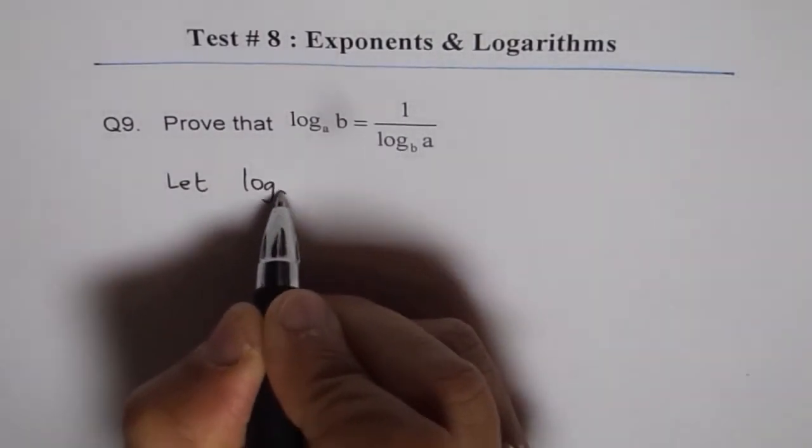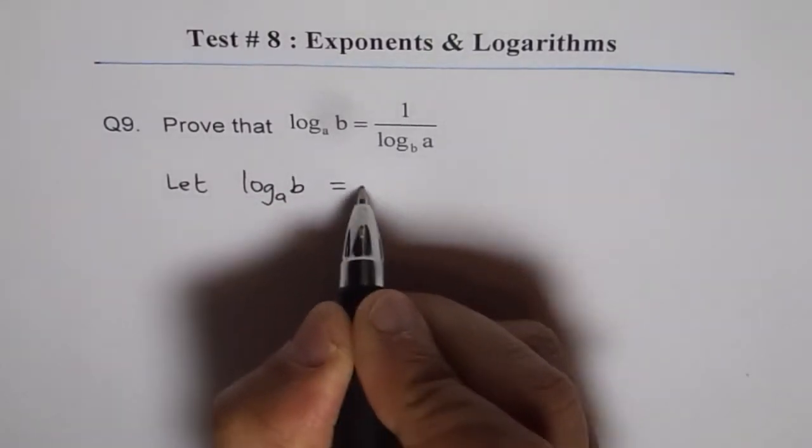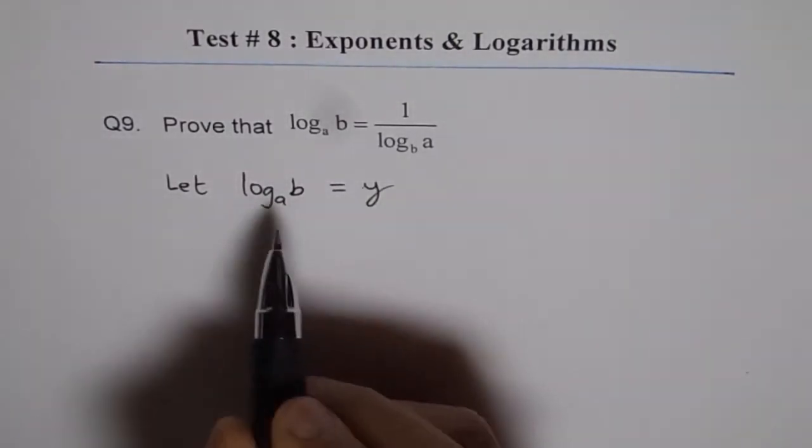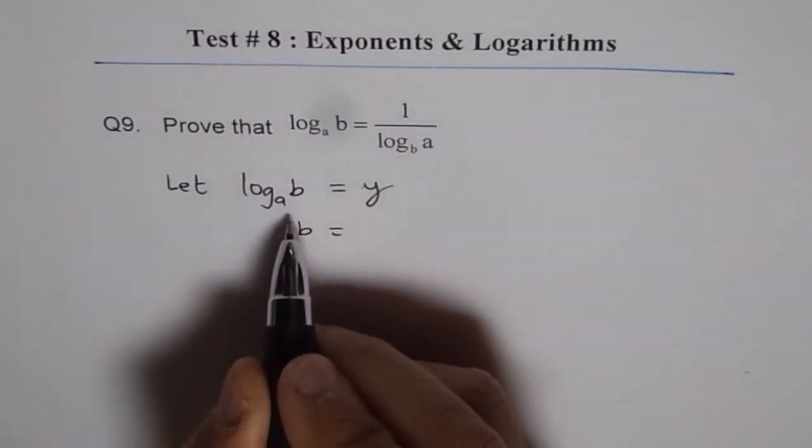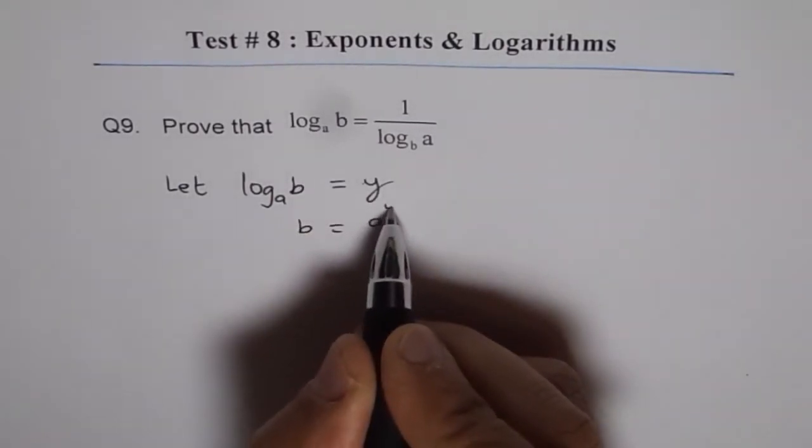Let log of a to the base b equals y. Then you can write this as b equals, in the exponential form by definition, a to the power of y.